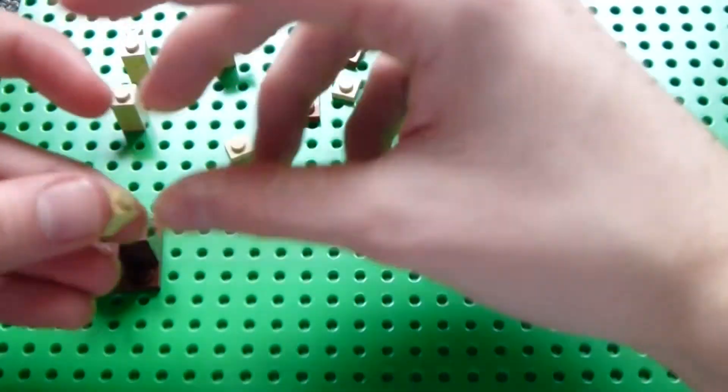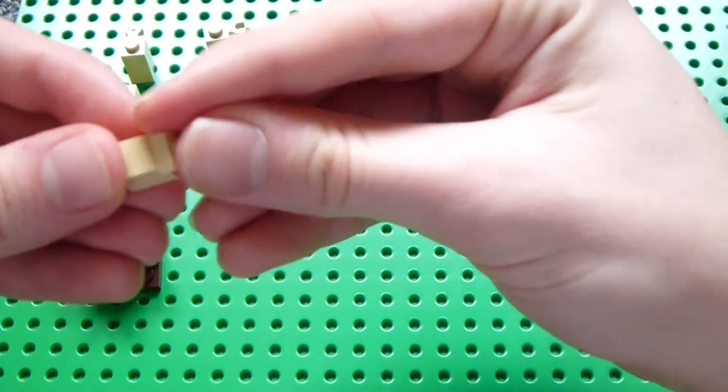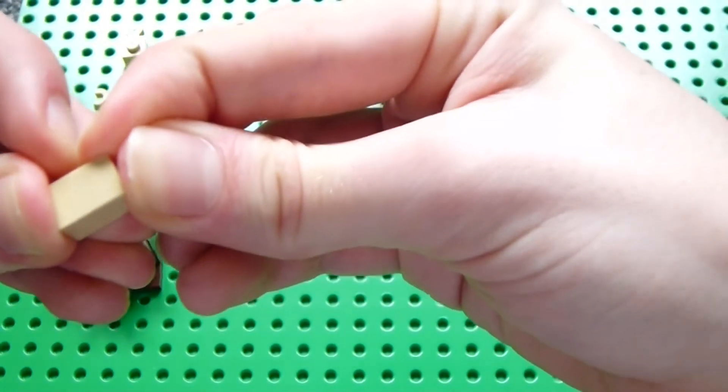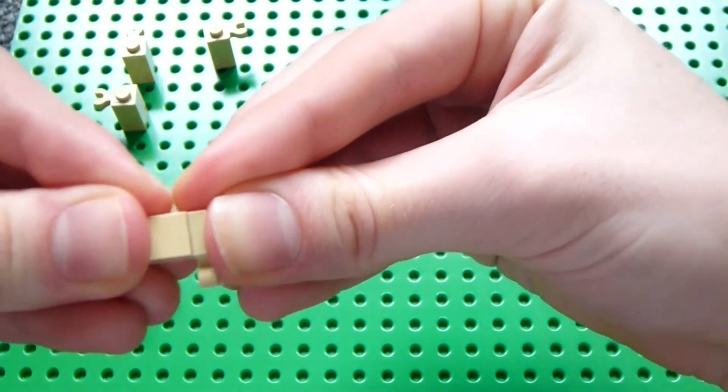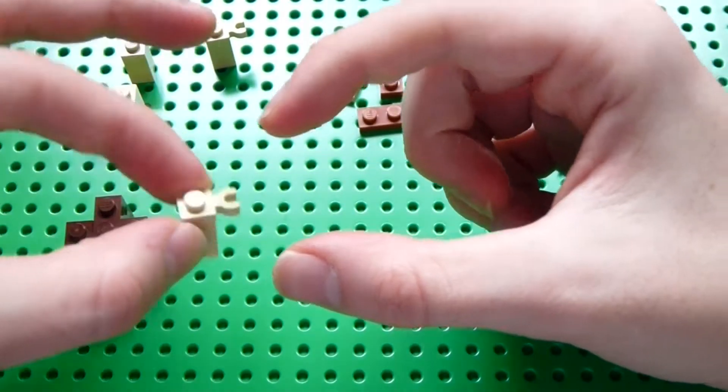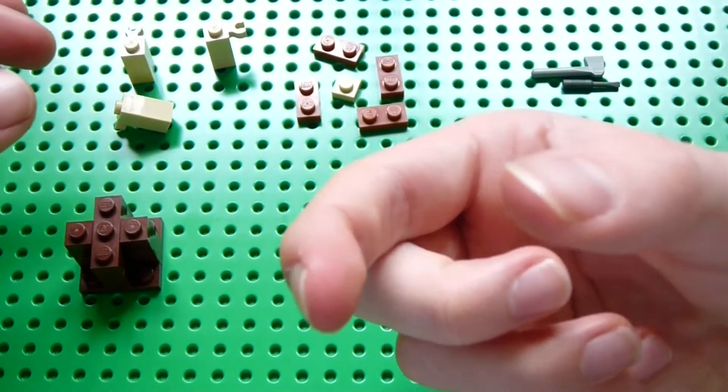Take a 1x1 tan brick, top of it, place a 1x1 tan plate, and then a modified tan plate with the claw facing horizontally.